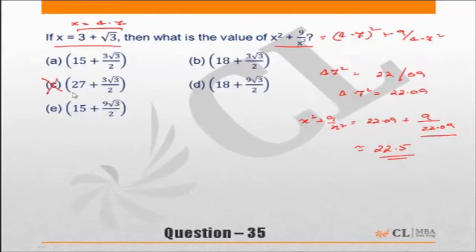Choice C is incorrect because it is greater than 27. Now look at the other choices. All the choices have 3 root 3 by 2 or 9 root 3 by 2. So let's calculate 3 root 3 by 2.